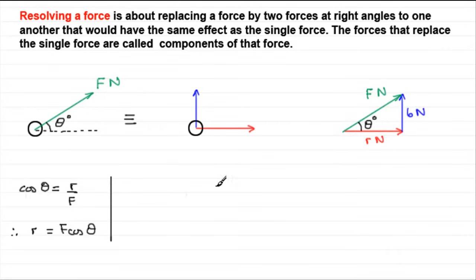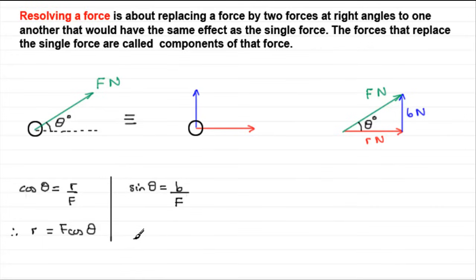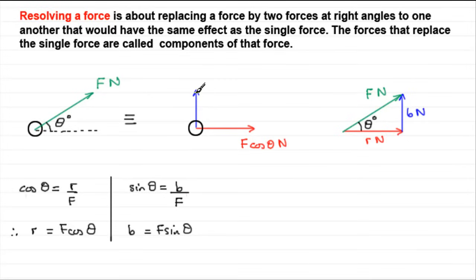We can do exactly the same for the blue component. We figure out B by looking at the sine ratio, because this side is the opposite side to theta, and this is the hypotenuse. Sine of an angle always compares the opposite side to the hypotenuse. So, sine theta equals B divided by F. Multiplying both sides by F, B equals F sin θ. So, the red component is F cos θ Newtons and the blue component is F sin θ Newtons.